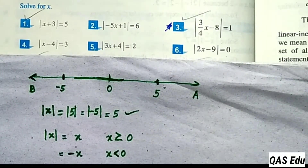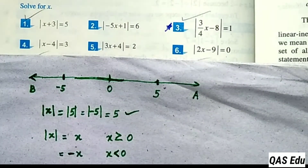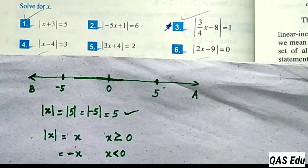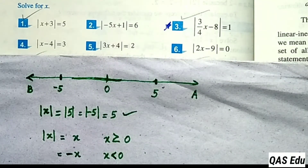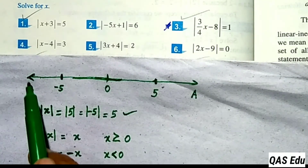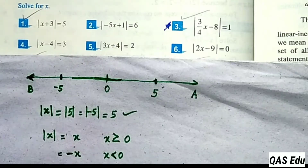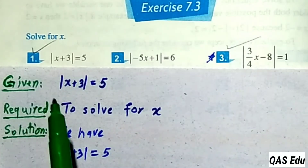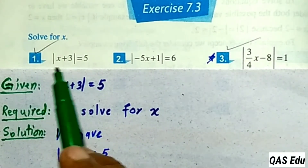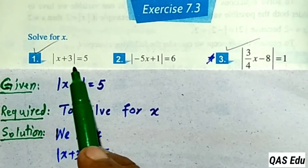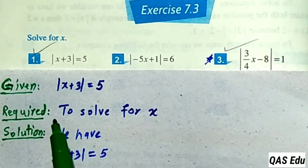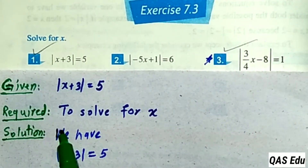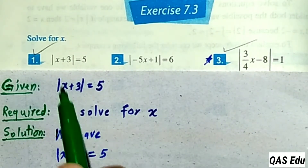Our distance cannot be negative. That is the absolute value background theory. We have a question for the exercise: the absolute value of x plus 3 is equal to 5.